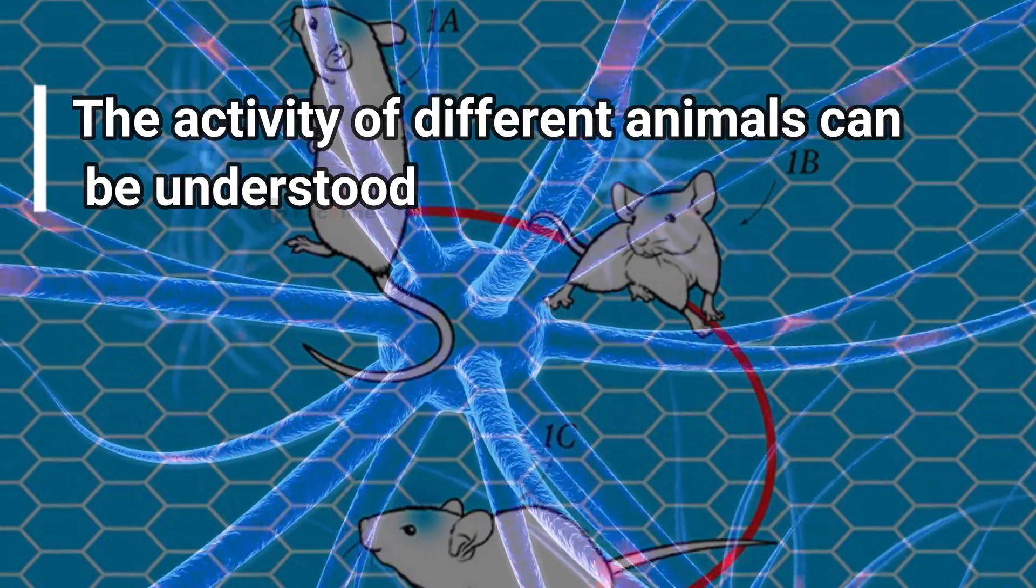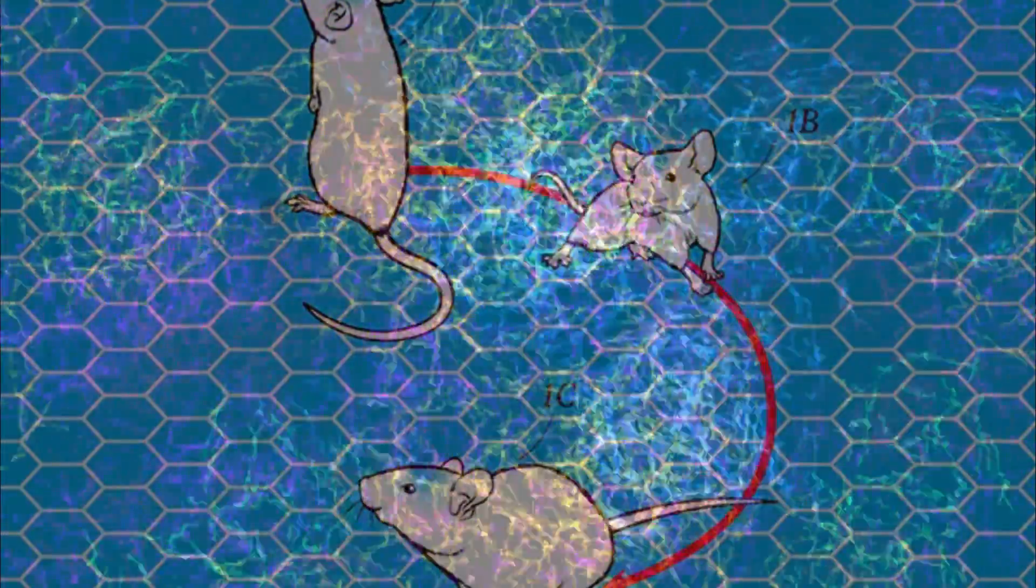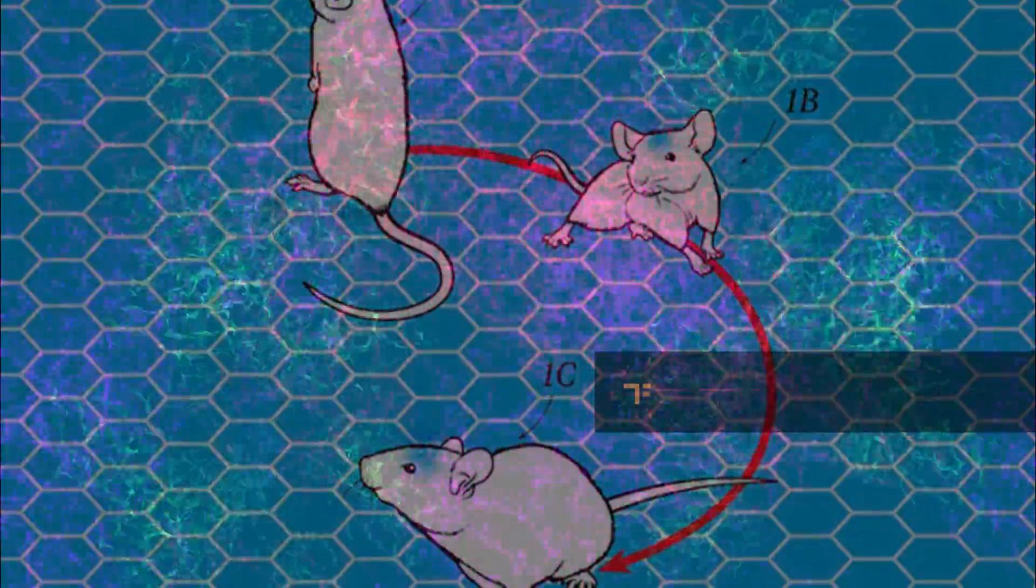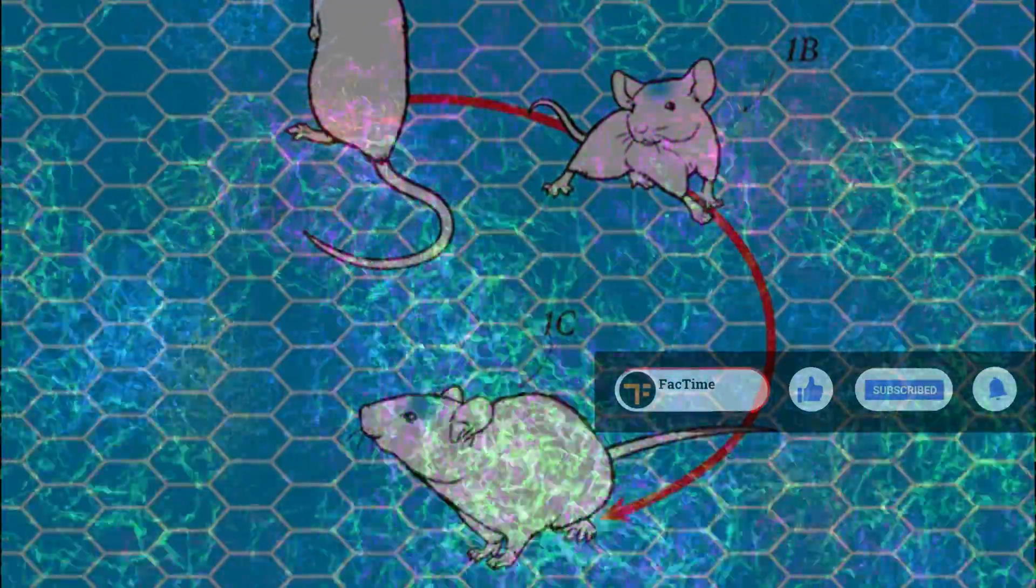The activity of different animals can be understood. That means, by interpretation of the electric impulses from the brain of the animals, their thinking can be understood easily.